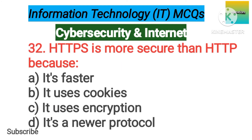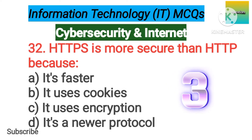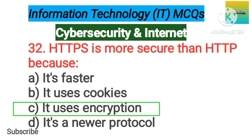Number 32. HTTPS is more secure than HTTP because option A: It's faster. B: It uses cookies. C: It uses encryption. D: It's a newer protocol. The correct answer is option C, it uses encryption.